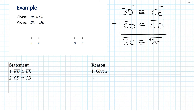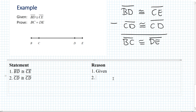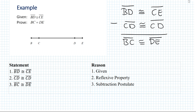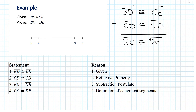Now that we have that, we can state that segment BC is congruent to segment DE, with the reason being the subtraction postulate. Finally, we can say that BC is equal to DE, and the reason is the definition of congruent segments. Notice that you can use a definition either going from congruent to measures, or from measures to congruent segments, because the definition is actually biconditional.